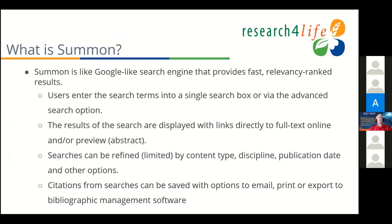Please go on with Summon and combine the demo. Summon is a Google-like search engine — fast, reliable, relevancy-ranked results. You enter search terms in a single box, and there's an advanced search option. Results are displayed with links to full text and preview. Searches can be refined and limited by content type, discipline, publication date, and other options. It doesn't have all the options PubMed has, but it's still useful. Citations from searches can be saved with options to email, print, or export to bibliographic management software.